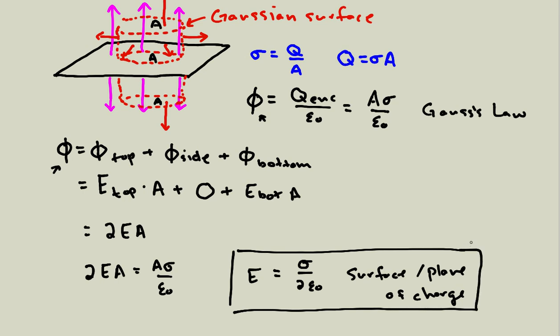All we really did was use symmetry and then explicitly calculate the electric field by making a clever choice of Gaussian surface, and then equate the flux to what we get from Gauss's law.